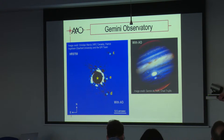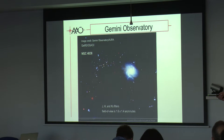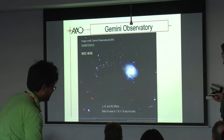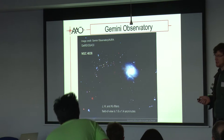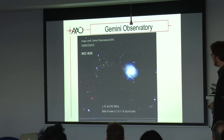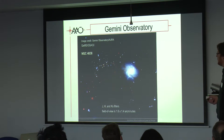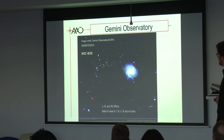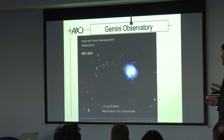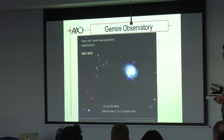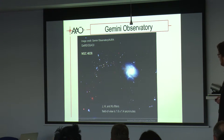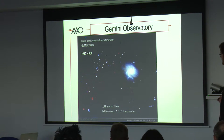Here is another example of the science you can do with adaptive optics — correction over a slightly larger field of view, 1.6 arcseconds across, of NGC 4038 at longer wavelengths near red wavelengths J, H and K. You can see here that the GEMS instrument with the GSAOI can image star clusters — it can distinguish star clusters from the background stars, which is quite amazing.